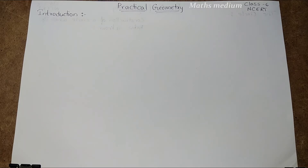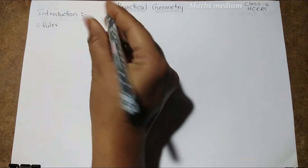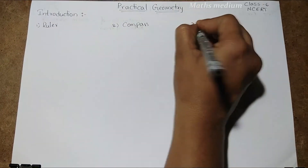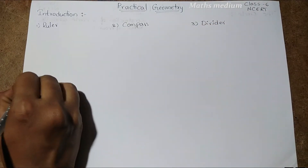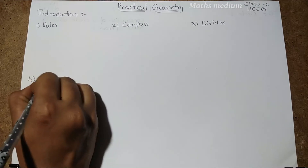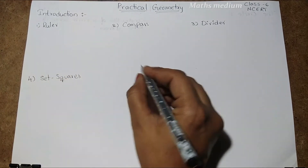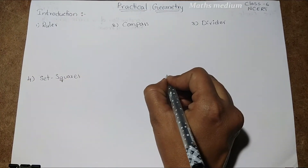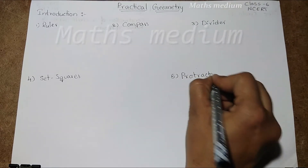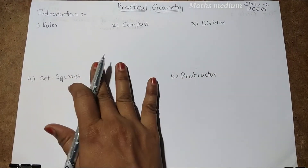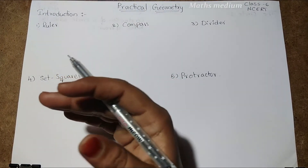So in general, we have five geometrical tools: the first one is a ruler, the second one is a compass, the third one is a divider, the fourth one is set squares, and the fifth one is a protractor. These are the five geometrical tools we are going to use for practical geometry or for any geometrical shapes construction.